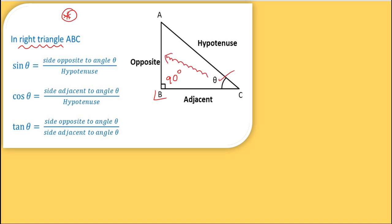In a right angle triangle with angle θ, the side opposite to θ is called the opposite side, the side next to θ is the adjacent side, and the longest side AC is called the hypotenuse. BC is the adjacent side and AB is the opposite side.